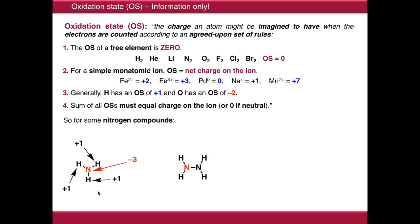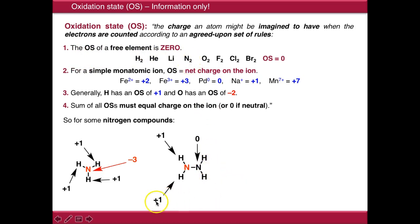If we move to hydrazine, we've now substituted one of our hydrogens for a nitrogen. Our other two hydrogens still contribute charges of plus one. The nitrogen-nitrogen bond contributes zero, because we treat it the same as the oxidation state of a free element. In order to balance these two positive charges, the oxidation state of this nitrogen is minus two.